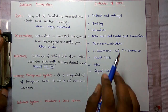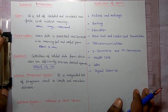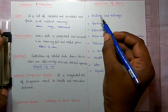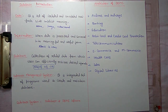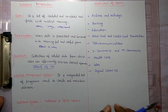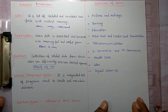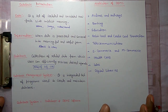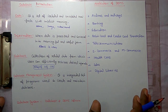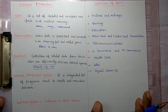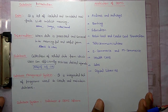Application of database management system: In Airlines and Railway, you can use a database management system. Airlines and IRCTC use it for ticket booking and storing data. In Banking, banks use databases for customer inquiry, accounts, loans, and other transactions.